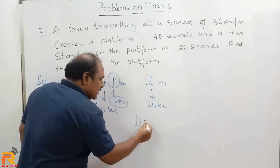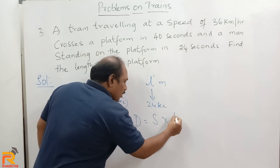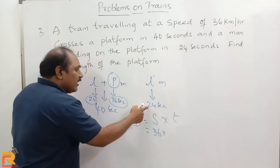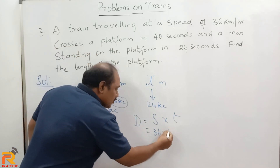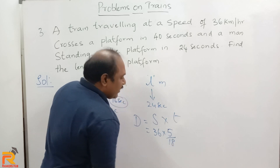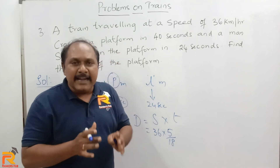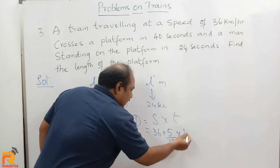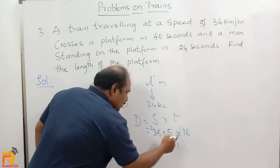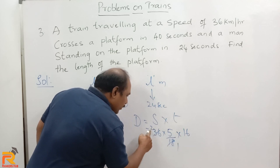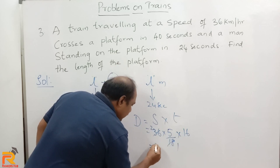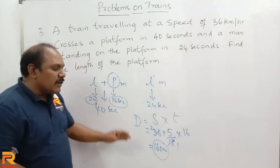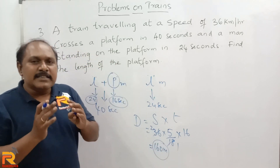Distance equals speed into time. The speed given is 36 kilometers per hour, but time is in seconds, so we convert: 36 kilometers per hour into meters per second is 36 multiplied by 5 over 18, which equals 10 meters per second. Then multiply by time: 10 into 16 equals 160 meters. So the length of the platform is 160 meters.